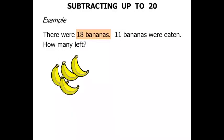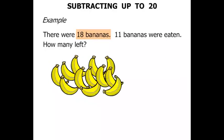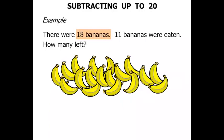2, 4, 6, 8, 10, 12, 14, 16, 18. Alright, 18 yellow bananas. 11 bananas were eaten. So we are going to subtract 11. Get rid of 11.